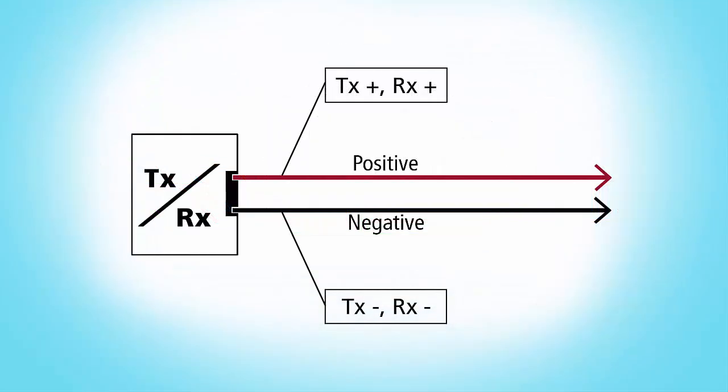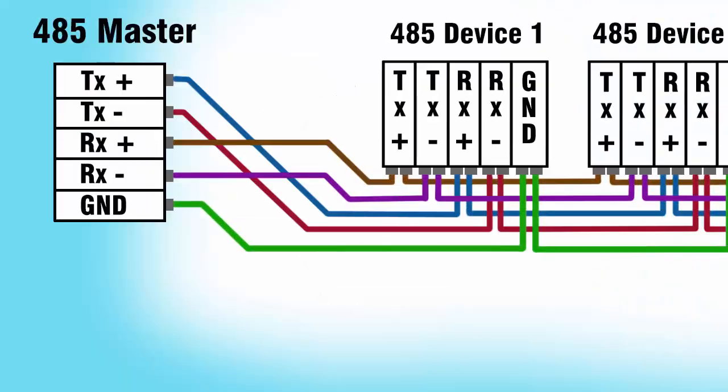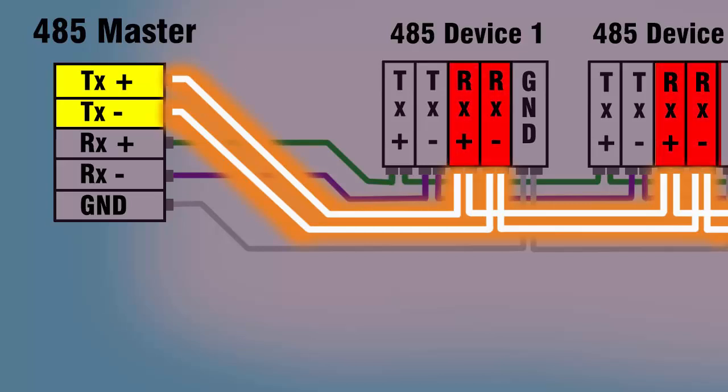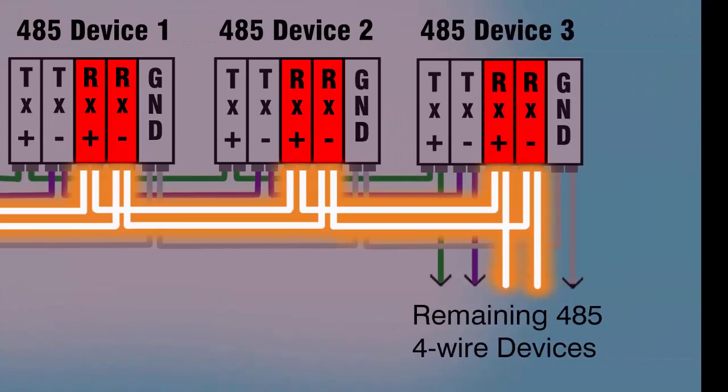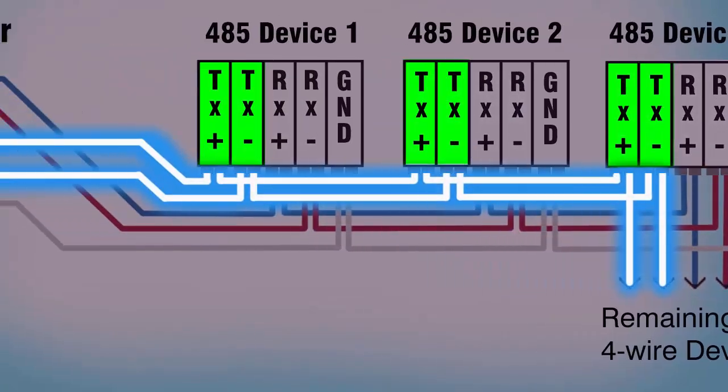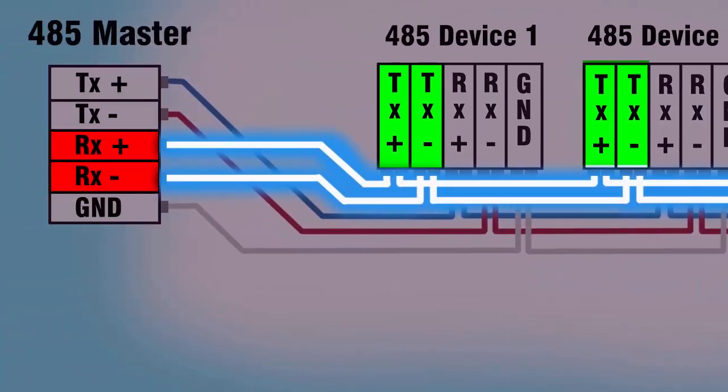In a two-wire network, the transmitter and receiver of each device are connected to a pair of wires, positive and negative. Four-wire networks have one master port with the transmitter connected to each of the slave device receivers on one pair of wires. The slave transmitters are all connected to the master receiver on a second pair of wires.